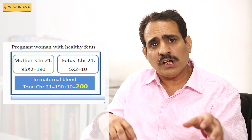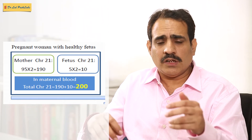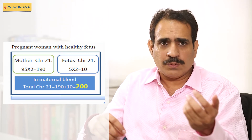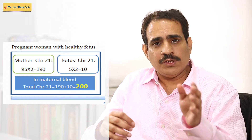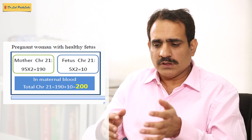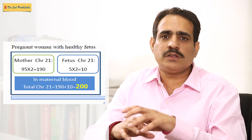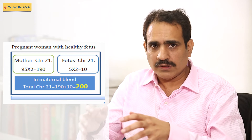Let us consider two scenarios. In scenario one — a normal scenario — the fetus has two copies of chromosome number 21. Let us assume that 95 percent of the DNA is of maternal origin and only 5 percent is coming from the fetus. Since everybody has two copies of the chromosome in question, 95 multiplied by 2 gives 190 copies coming from the mother. Because the fetus is also normal, 5 percent fetal DNA multiplied by 2 gives 10 copies from the fetus. So there will be around 200 copies of chromosome number 21 in a normal case.